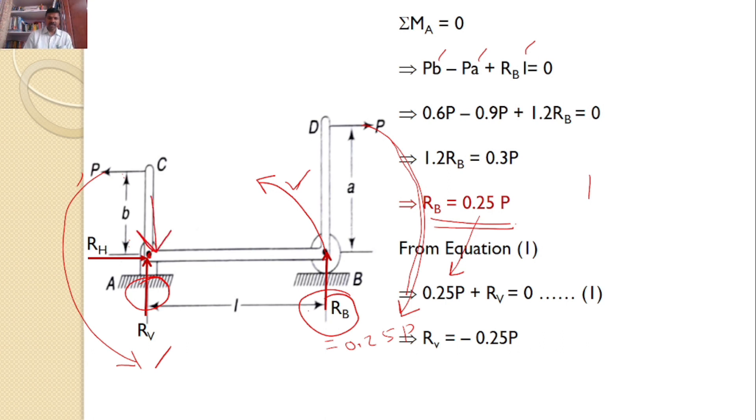So RV will act in the opposite direction, and RH equals 0 already. Hence RV equals minus 0.25P. Minus indicates the force is acting in the opposite direction. So RB equals 0.25P and RV equals minus 0.25P are the answers for this given problem.